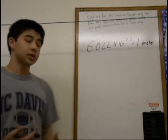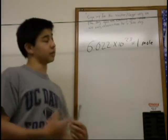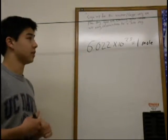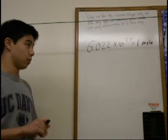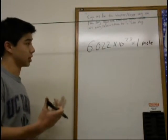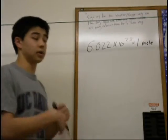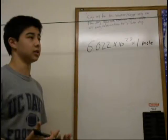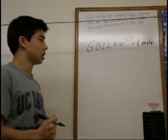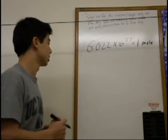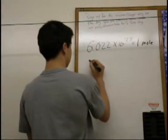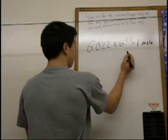So oftentimes, you're given a problem and they give you the weight or the mass of something in grams. And using the periodic table, you can convert it to moles, which is useful for you to be able to finish the equation or reaction. So, for example,